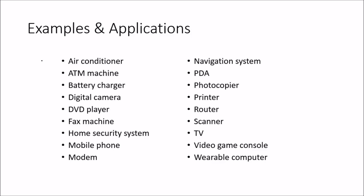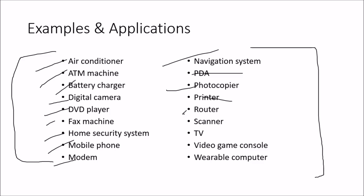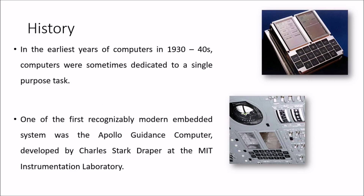For example, you might have many things in this list. All these have embedded systems: air conditioner, ATM machine, battery charger, digital camera, DVD player, fax machine, home security system, mobile phone, modem, navigation system, PDA, photocopier, printer, router, scanner, TV, video game, and wearable computer. All these applications have embedded technology.